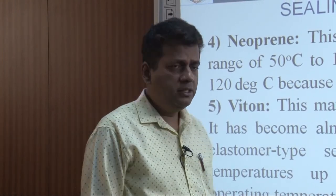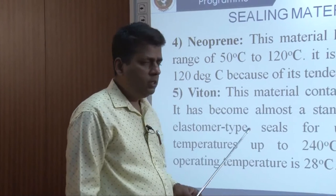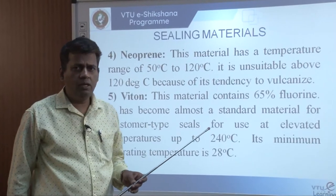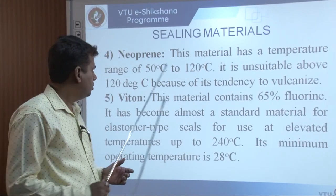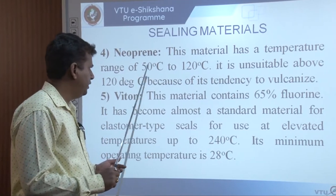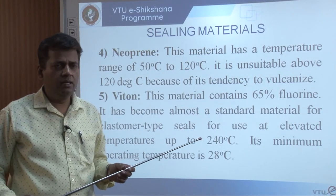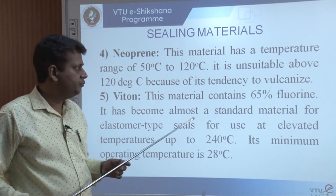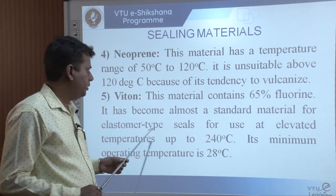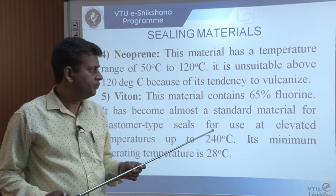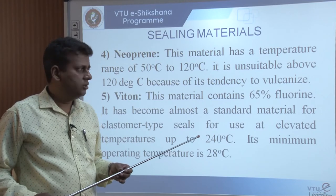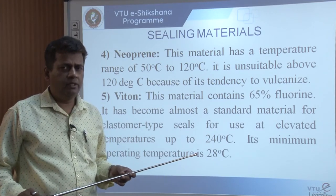Neoprene is a lower-cost sealant, cheaper than silicon. Its temperature range is limited: from minus 50°C to 120°C. It is better than leather because it can be manufactured artificially and has good applications for light-load pistons, cylinders, and hydraulic rotary motors. However, for high-temperature applications it starts disintegrating, so it is better used for low to moderate temperature applications.